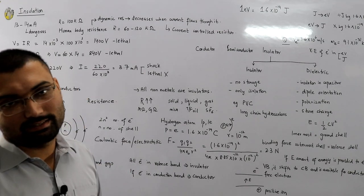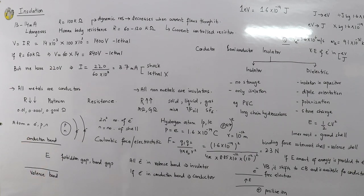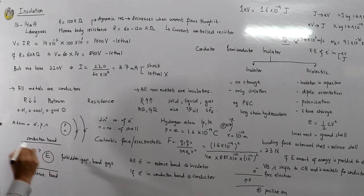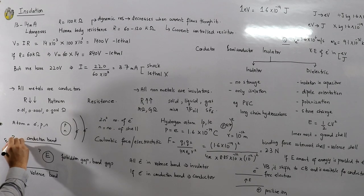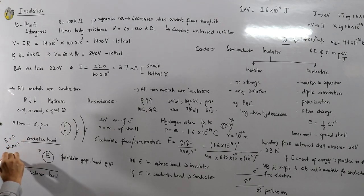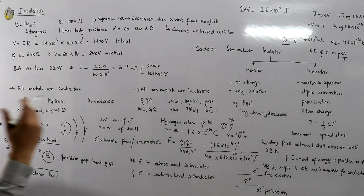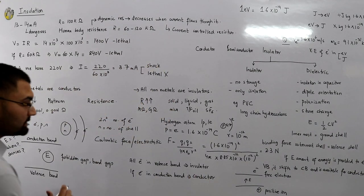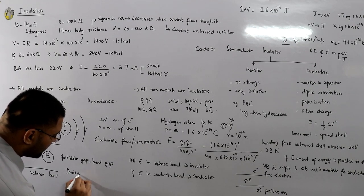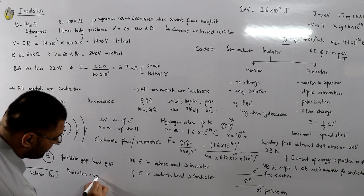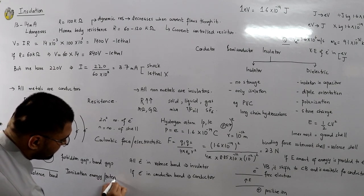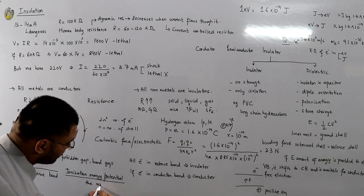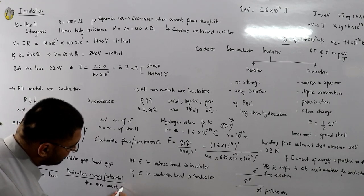But the question is: where does this energy come from? What are the sources of this energy E? For that, you need to watch the next video. Before closing, let me write the definition of ionization potential or ionization energy.